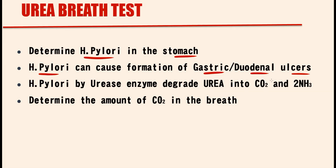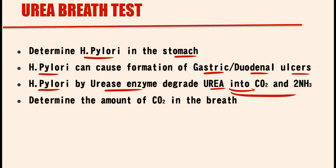The Helicobacter pylori test is based on the ability of Helicobacter pylori to degrade urea molecules, which is possible because Helicobacter pylori has a specific enzyme called urease. Urease provides degradation of the urea molecule to carbon dioxide and ammonia molecules, and then we determine the amount of carbon dioxide molecules in the breath.